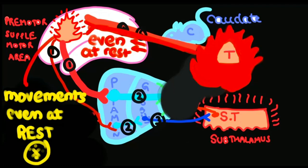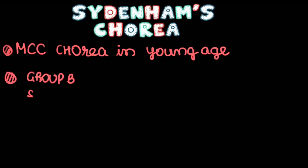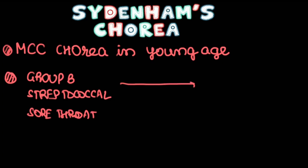Now let's see about Sydenham's chorea. It's the most common cause of chorea in young age and is usually seen after streptococcal group B sore throat infection, not skin infections. It takes four weeks to even six months for B cells to produce antibodies against the basal ganglia centers. It's more common in